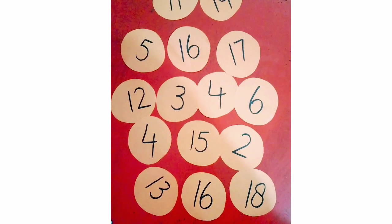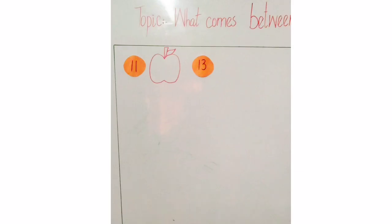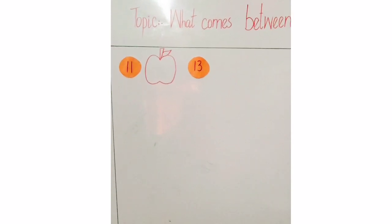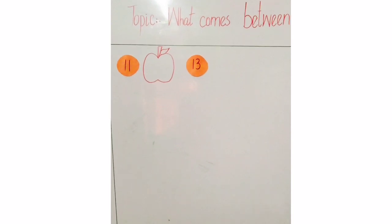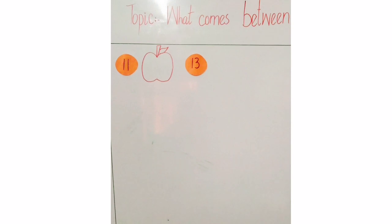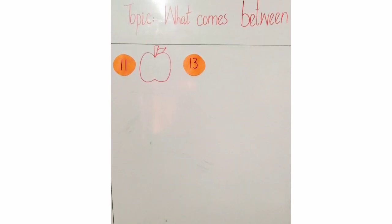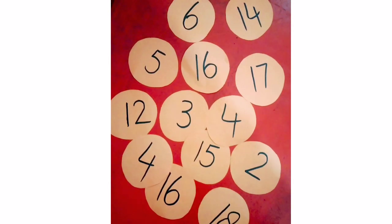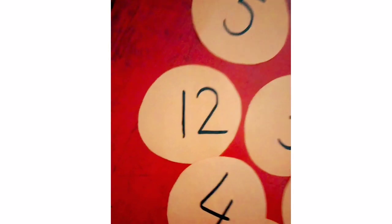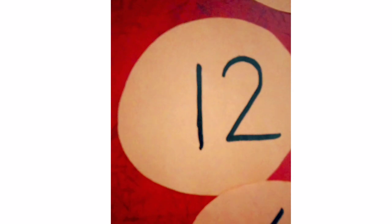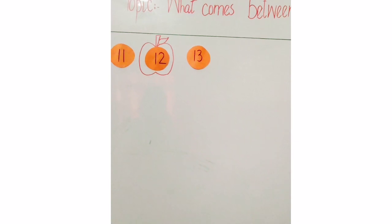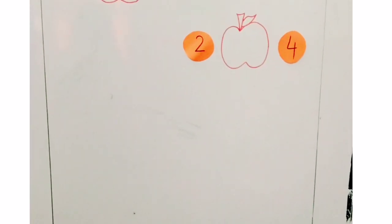We have a flash card with some different numbers like 5, 3, 15, 2, 16. We place number 11 and number 13 on the board — something is missing between 11 and 13. What is missing? Number 12! What comes between 11 and 13? Number 12 comes between 11 and 13. Let's find the flash card of number 12 and place it between 11 and 13. Now we complete this task.